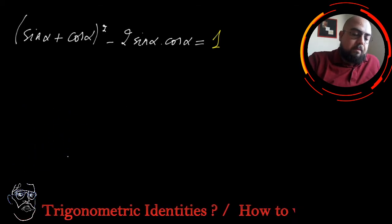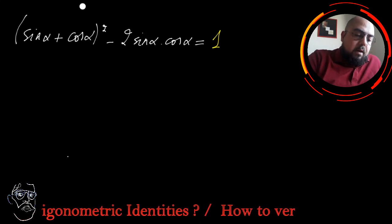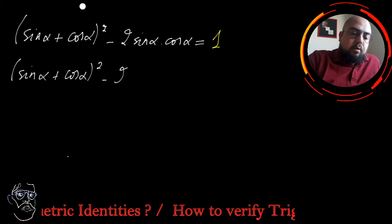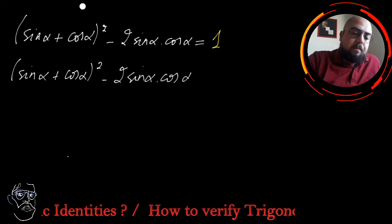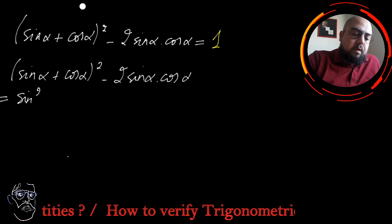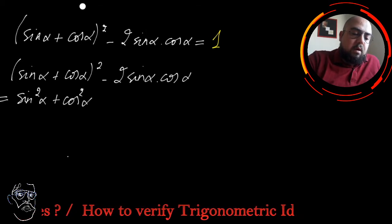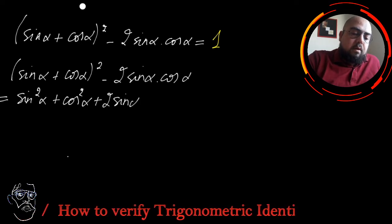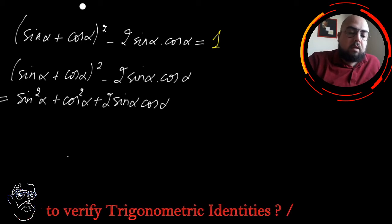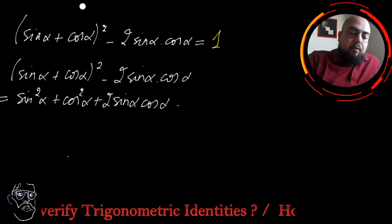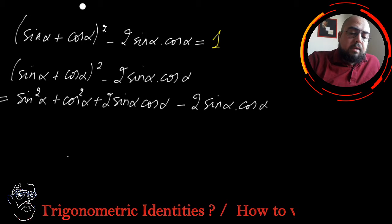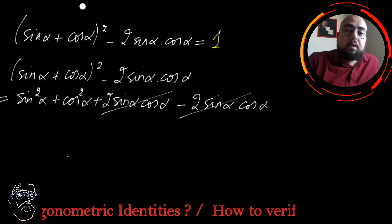The first example: sine alpha plus cosine alpha to the power of 2, minus 2 sine alpha times cosine alpha, should equal 1. I take the left part and expand it. Since it's in the form (a + b)², I get sine squared alpha plus cosine squared alpha plus 2 sine alpha cosine alpha. Then minus 2 sine alpha cosine alpha — these two terms cancel out.